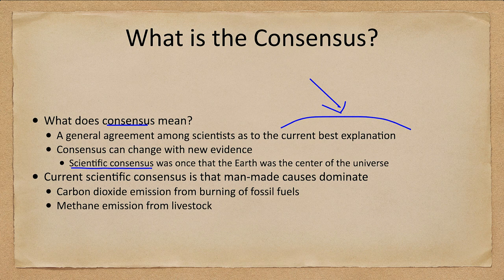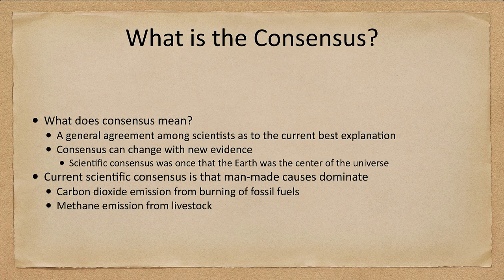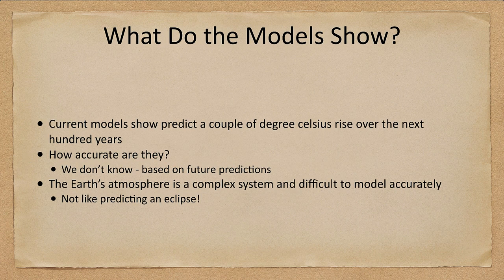We have carbon dioxide emissions from fossil fuels and methane emissions from livestock. When we look at models, most predict a couple of degrees of temperature rise over the next hundred years.